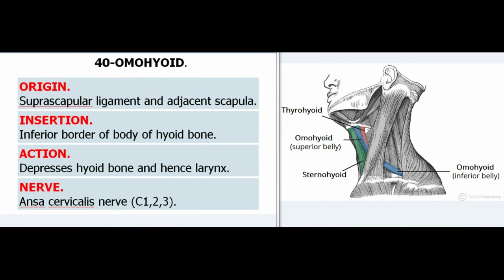40. Omohyoid. Origin: Suprascapular ligament and adjacent scapula. Insertion: Inferior border of body of hyoid bone. Action: Depresses hyoid bone and hence larynx. Nerve: Ansa cervicalis nerve, C1, 2, 3.